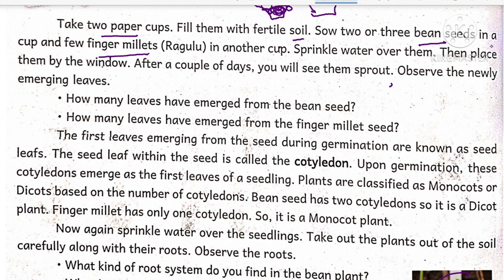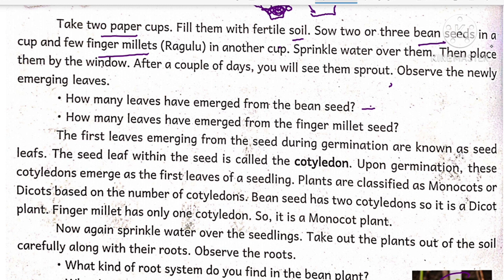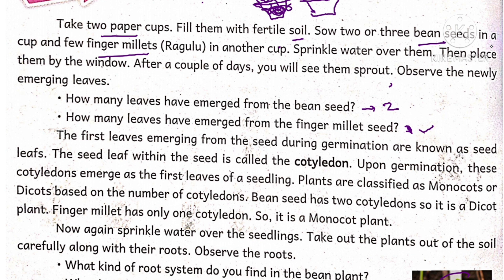Some questions are given in your textbook. How many leaves emerge from the bean seed? There are two. How many leaves emerge from the finger millet seed? There is only one, because it has one cotyledon, while the bean has two cotyledons.